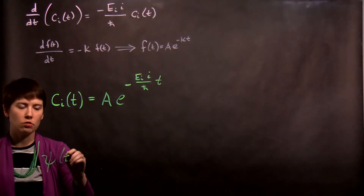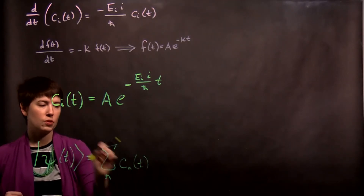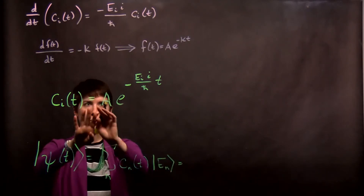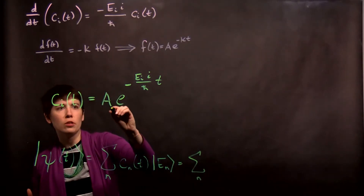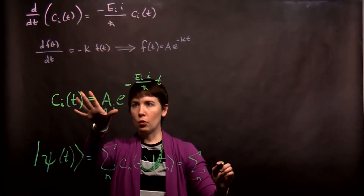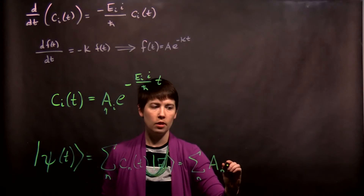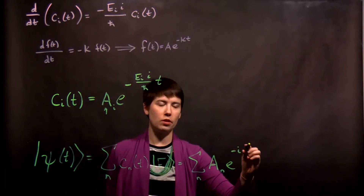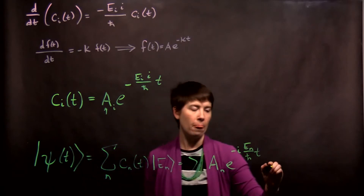So what that means is our general state — before we had a sum over n of these c_n, and it's i here because it's a specific one, it's n here because it's a general one — e to the n. We now rewrite this, and so we're talking about it in general, so n reappears. We still have n, but now what we want to remember is that these values are going to vary, so that actually needs a subscript too. We can call this a subscript n. And these different coefficients overall: e to the negative i, so that's just square root of negative one, e_n over h-bar times t, and then e_n.